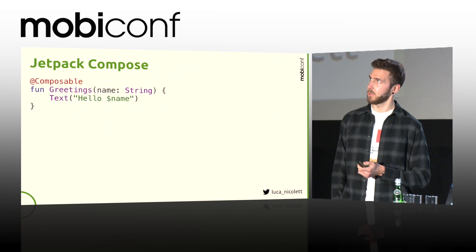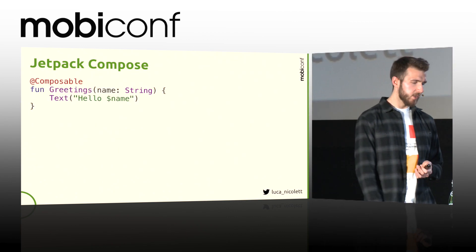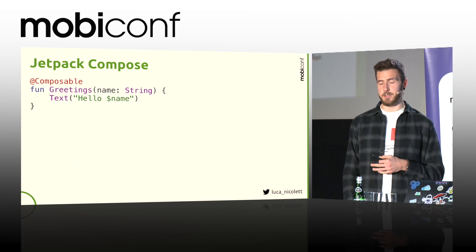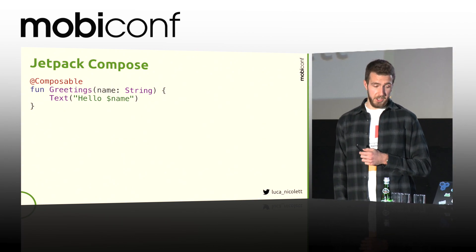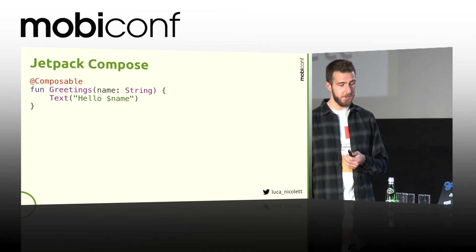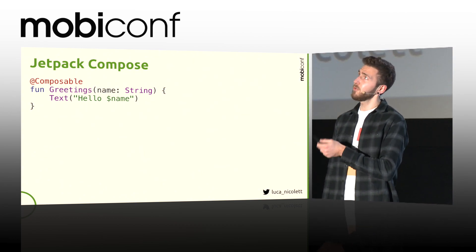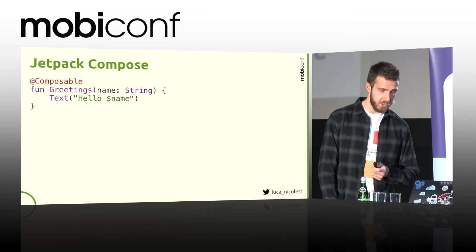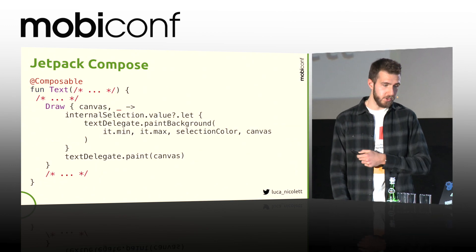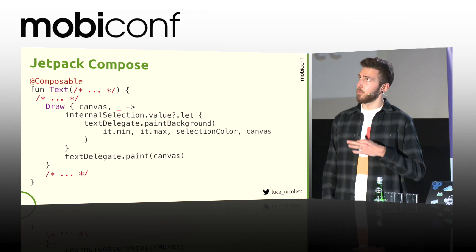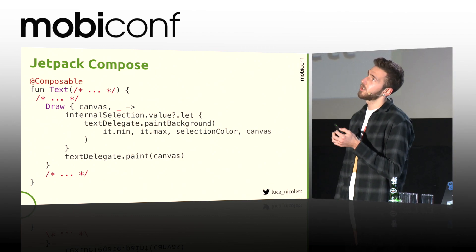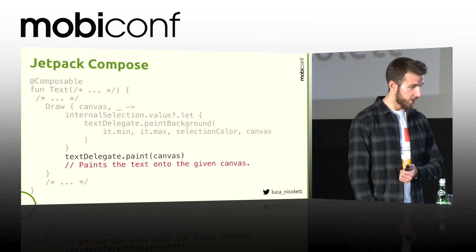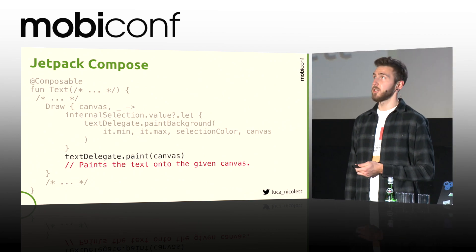But what's a composable function? Composable is actually an annotation which is meant to be used on functions with no return type. This annotation transforms your function into a component. This is the only code example you'll find on the website. This component is stateless and pretty simple. The text function is also a composable function — if you go deep dive into the code, you'll see that it calls a draw function, which is also a composable function, and in the end it just paints on the canvas.